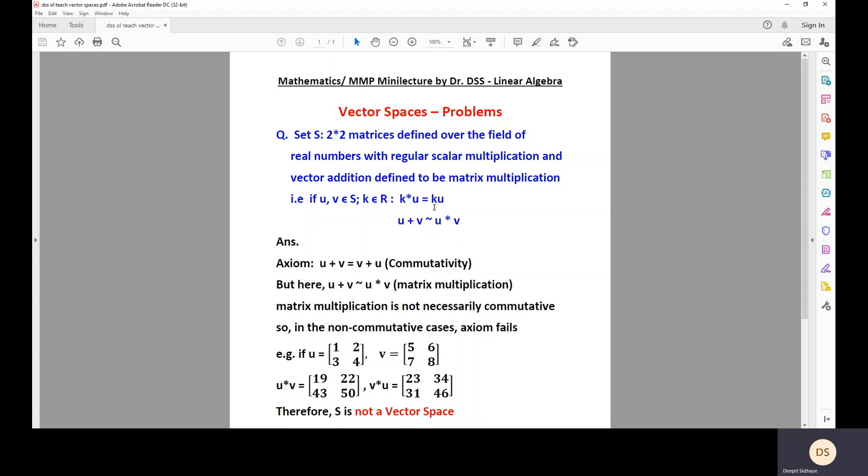All of us are aware that if such conditions were not imposed, that is if S was just a set of 2 by 2 matrices, it would have been a vector space over the field of real numbers. But here, it's a special condition.